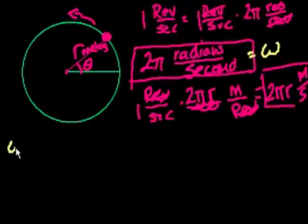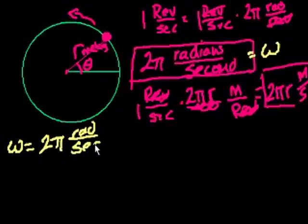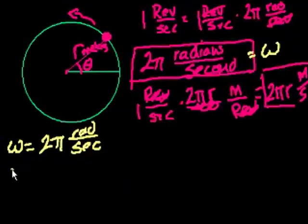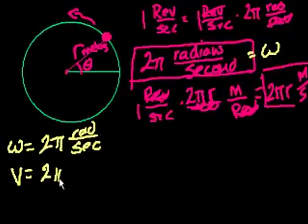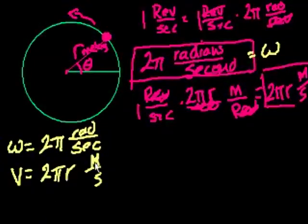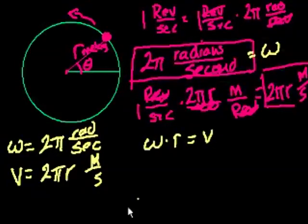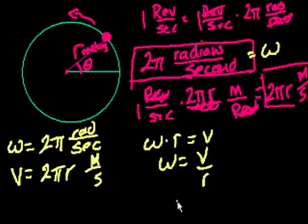So in this case, angular velocity is equal to 2π radians per second. And the velocity is equal to 2πr meters per second. So if we just ignore the units for a second, what do you see the difference between the angular velocity and the velocity? The angular velocity is 2π, and the velocity is 2πr. So in general, if you just multiply the angular velocity times r, you get the velocity. So angular velocity times the radius is equal to the velocity, or you can divide both sides by r, and you get the angular velocity is equal to the velocity divided by the radius.